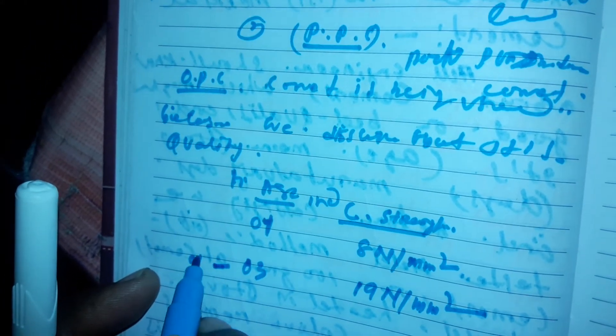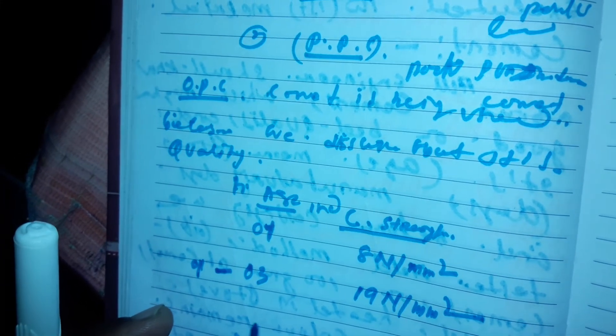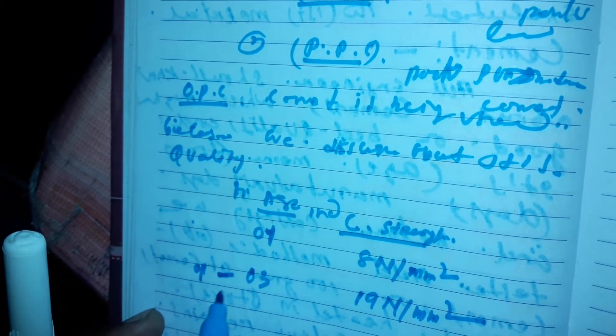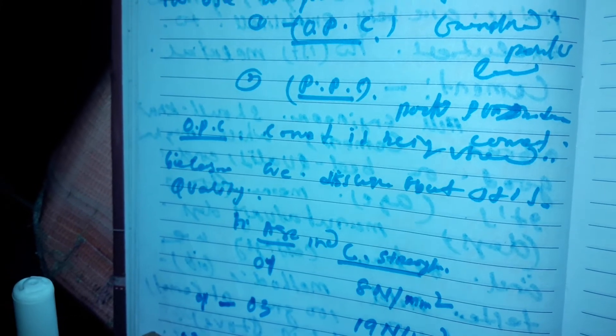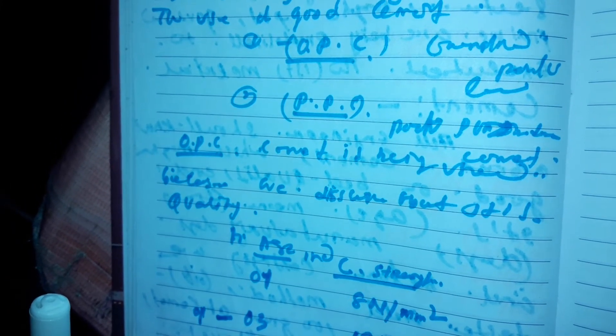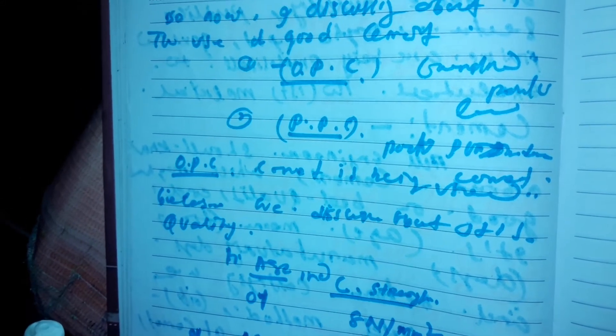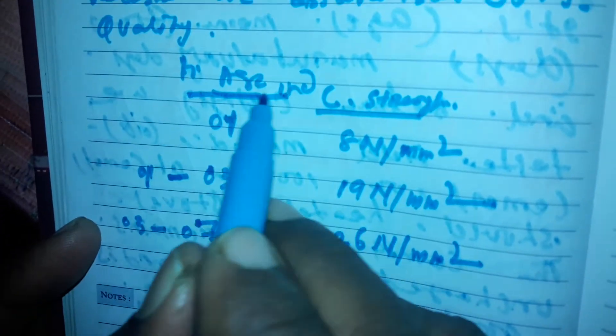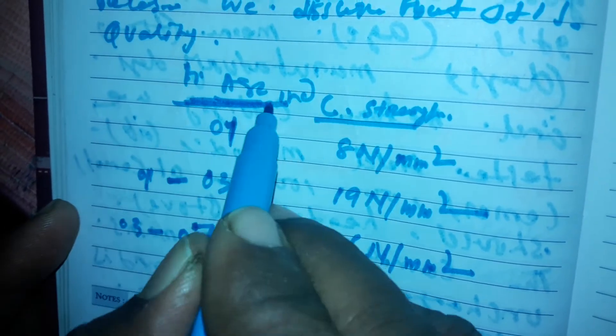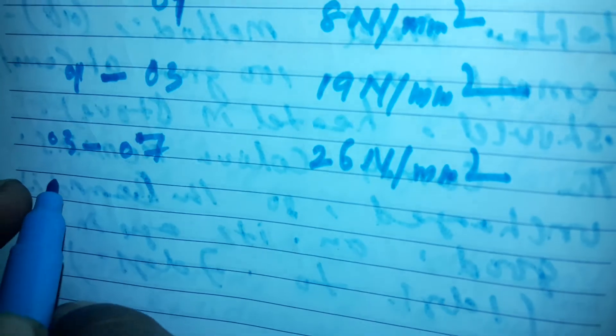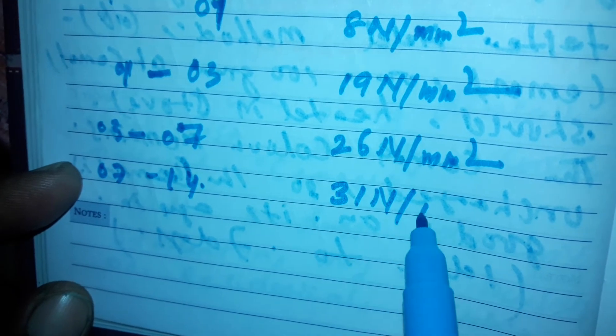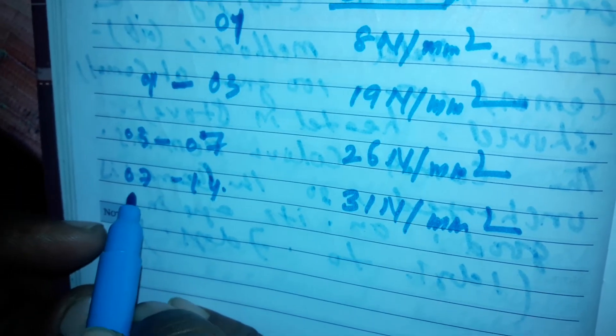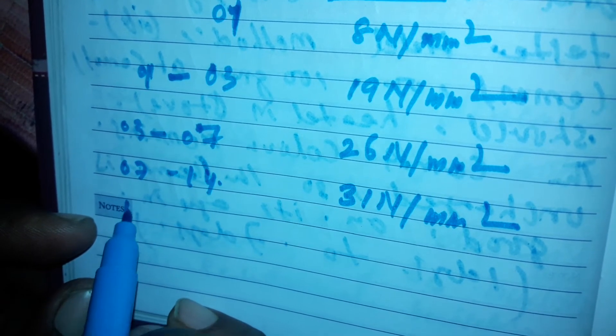From three days to seven days, compressive strength increases from 19 to 26 Newton per mm square. This is the working age. From seven days to 14 days, the strength will be 31 Newton per mm square.